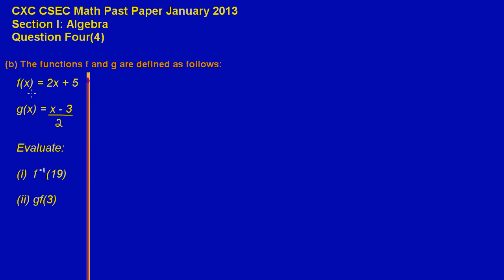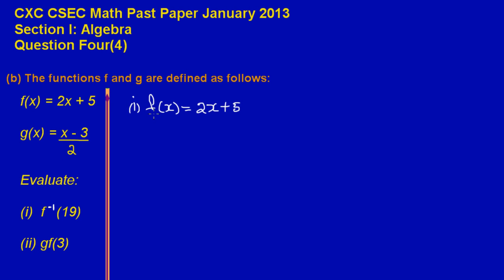The first thing I'm going to do is take f of x, since they're asking us to find f inverse. I'm going to find the inverse of f of x. So in part 1, before I find f inverse of 19, I'm going to find the inverse of f of x. So f of x is equal to 2x plus 5. To find the inverse of a function, the first step is to replace f of x with the letter y. So y is equal to 2x plus 5.